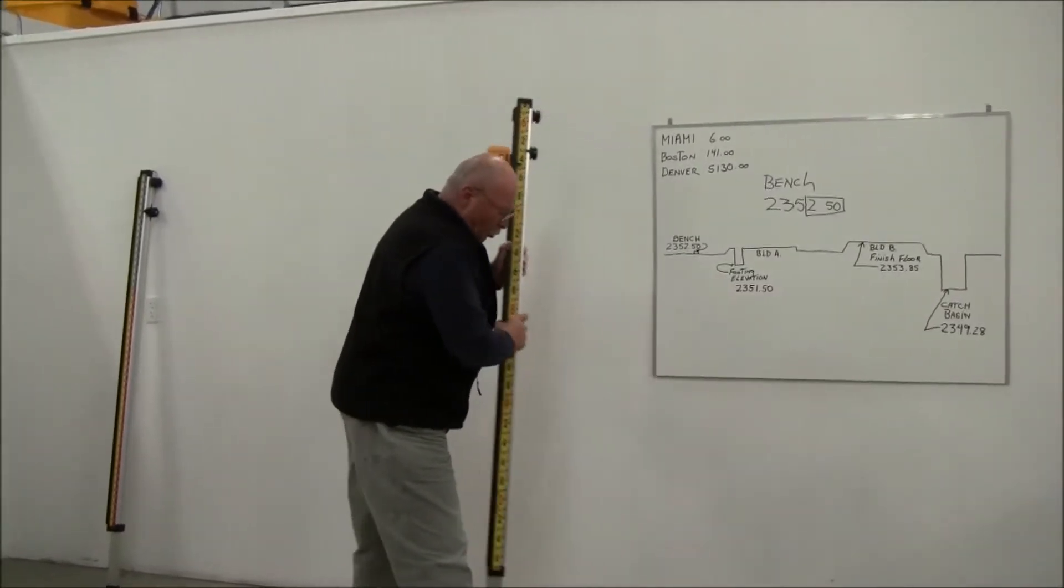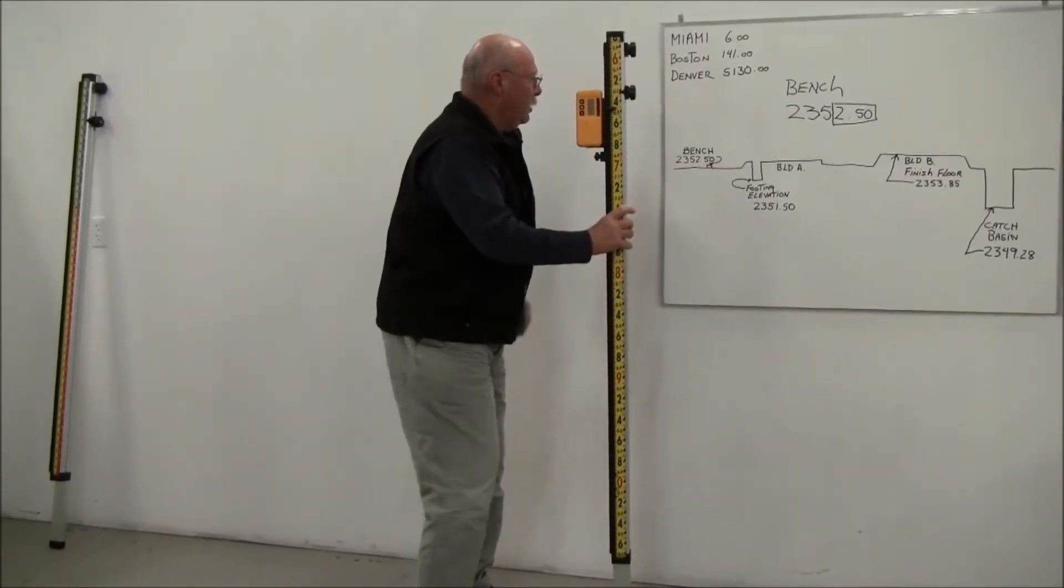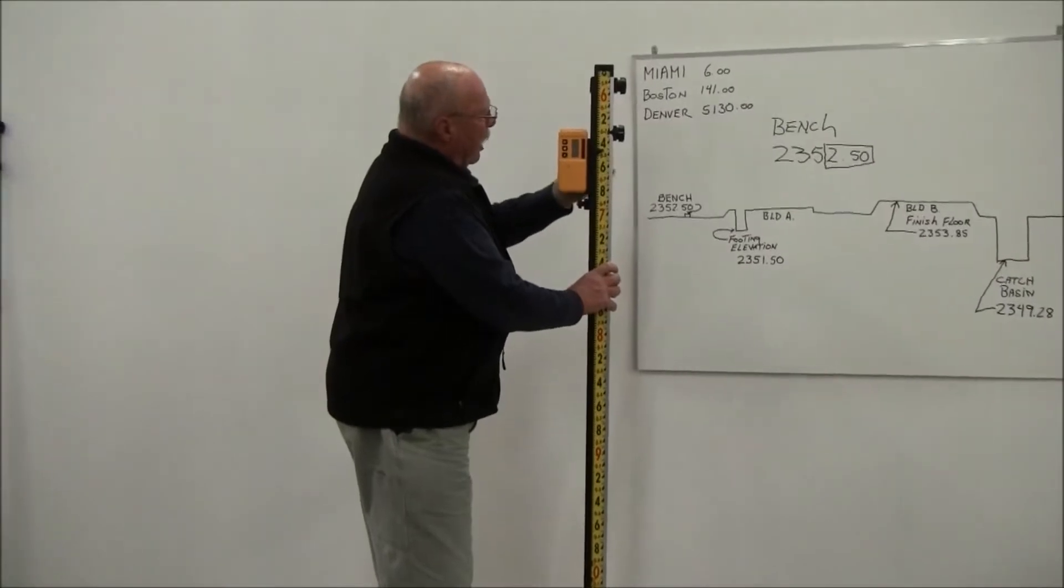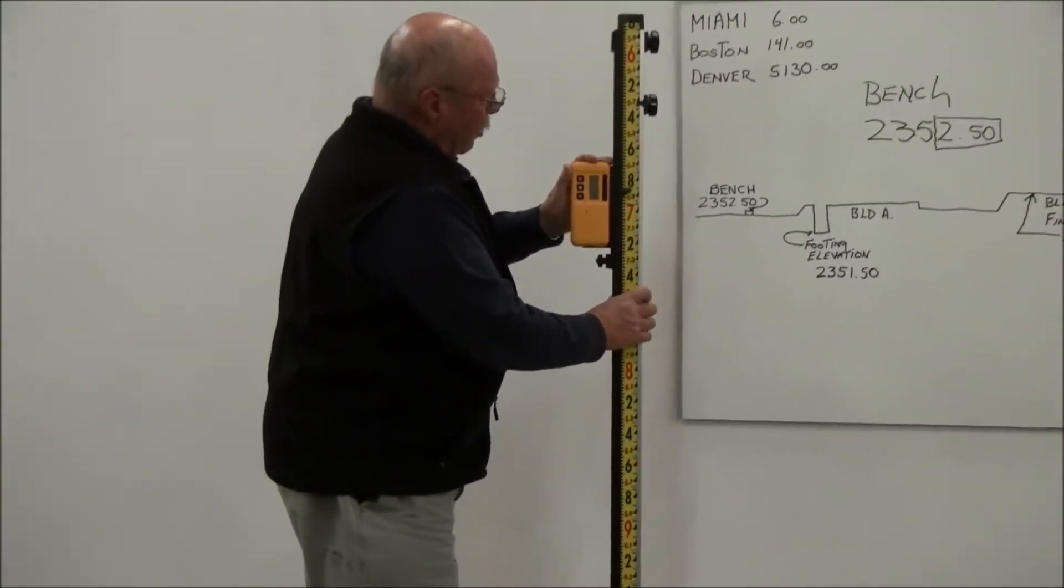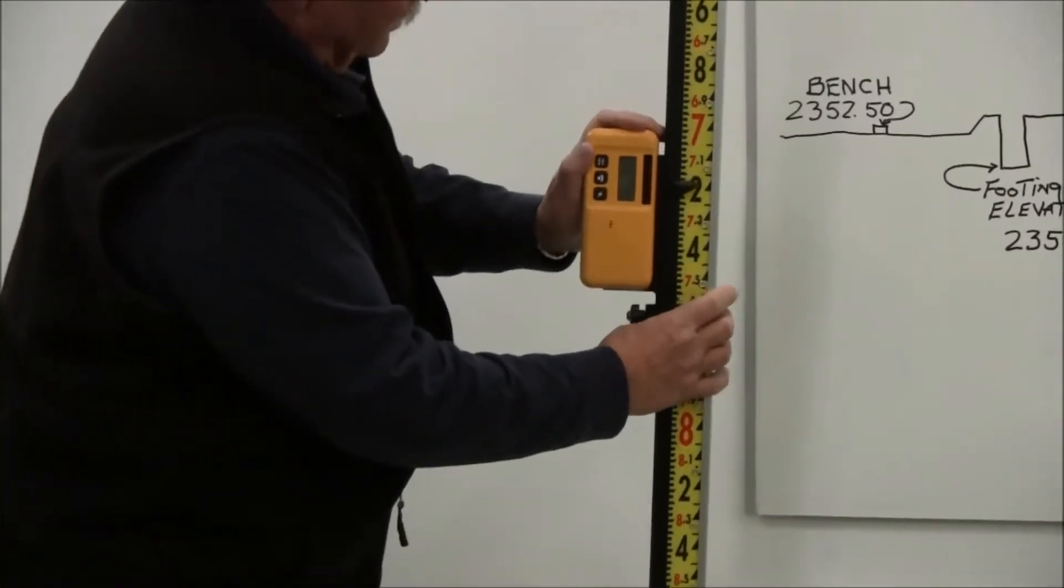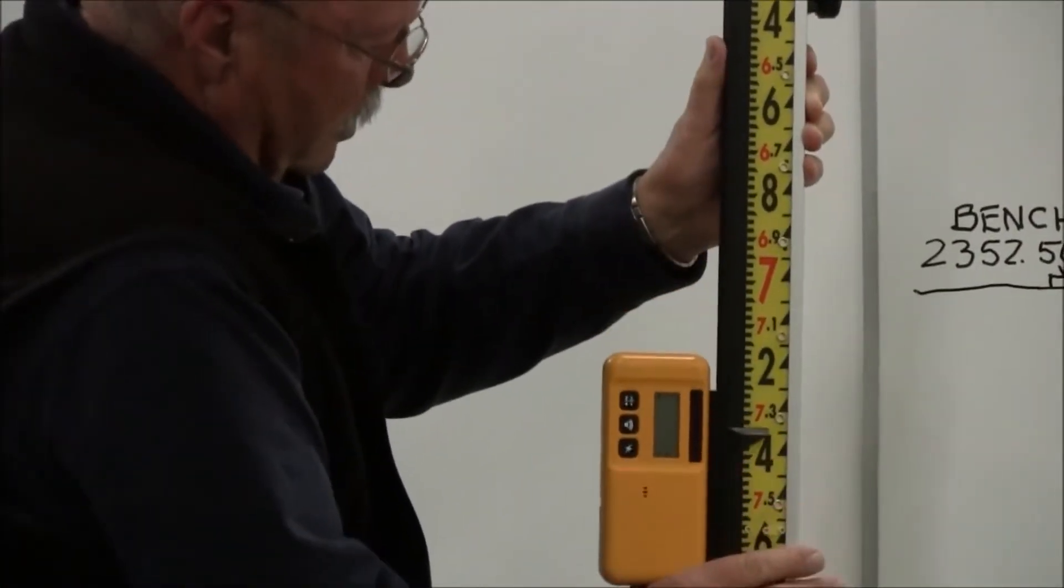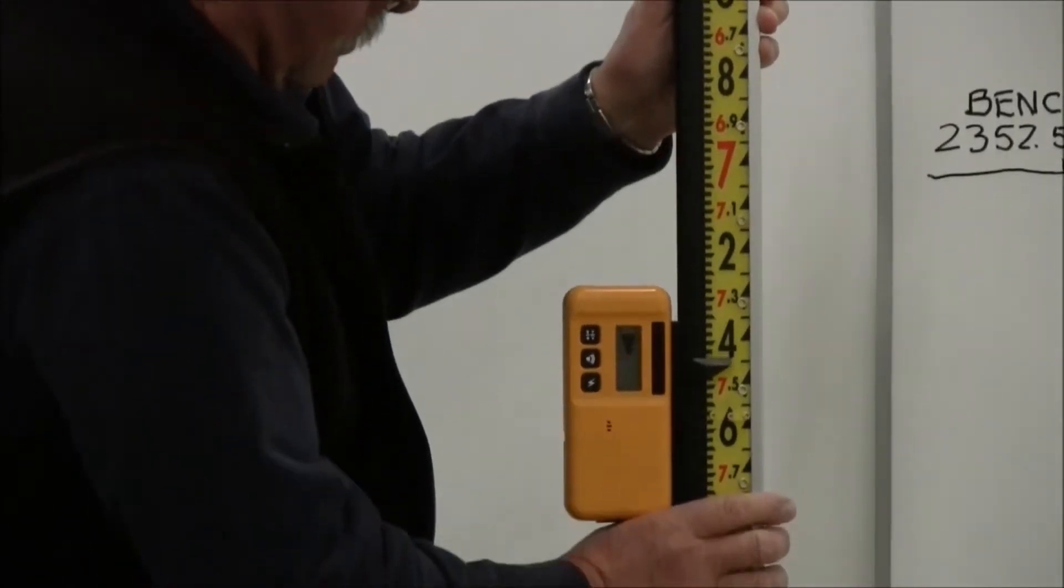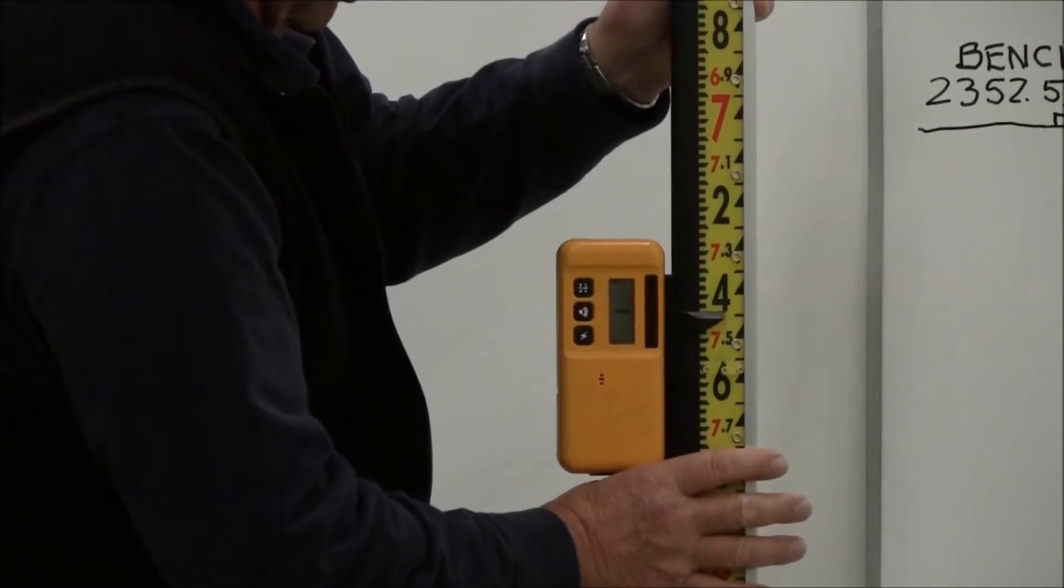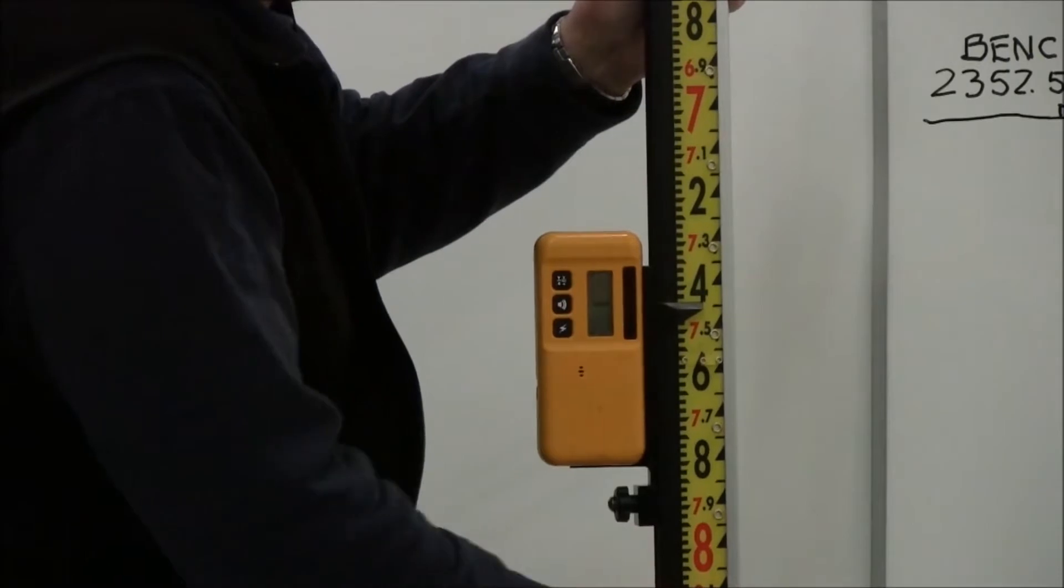So let's get to work here in terms of setting this rod up to this bench elevation. So what I would do is I'd walk over, set my rod on top of my bench right here, and then I'm going to run the receiver up and down until I pick up the steady tone. And that's going to tell me that I'm on grade. All right, so that's grade right there. Actually, I want to come up just a little bit. So I've locked onto the laser. Now I'm going to lock my receiver down so it doesn't move.